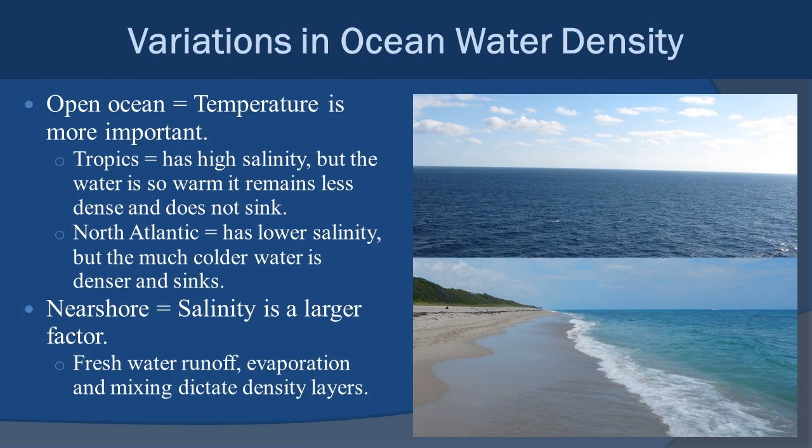In the open ocean, temperature is more important when it comes to density. In the tropics, salinity is generally high but the water is very warm, so it tends to remain less dense and doesn't sink as much. In the North Atlantic, salinity is lower but the water is much colder, and that density causes the water to sink. We'll get into a lot more about that later when we talk about thermohaline circulation, which ties into global climate.